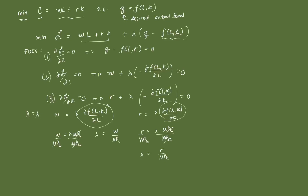Equating lambda equals lambda, we get W over MPL is equal to R over MPK. Rearranging, that gives us MPK over MPL is equal to R over W. We can also interchange to get MPK over R is equal to MPL over W.